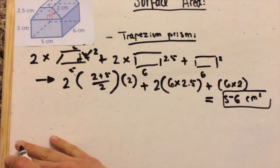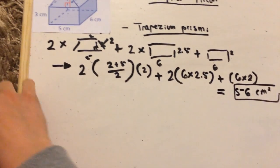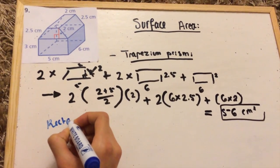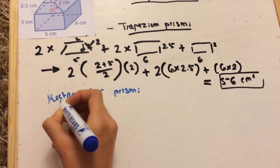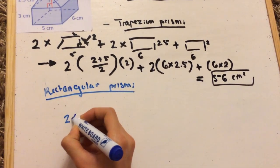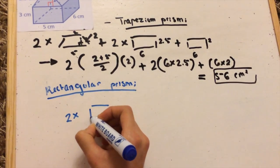Now moving on to our rectangular prism. This figure is composed of rectangles so it should be easy. We have two rectangles, one in the front, one in the back. We have two identical ones on the side, and we have one base rectangle.